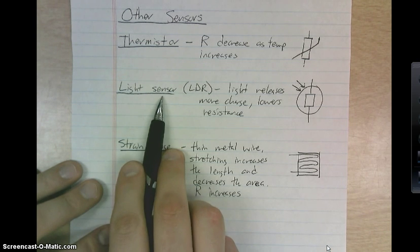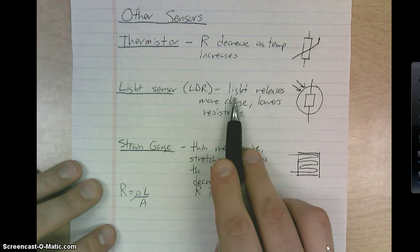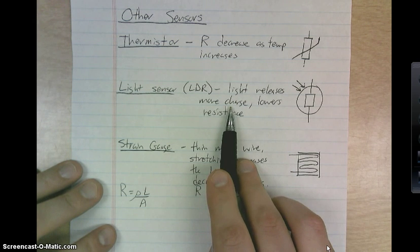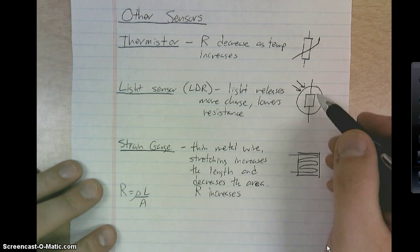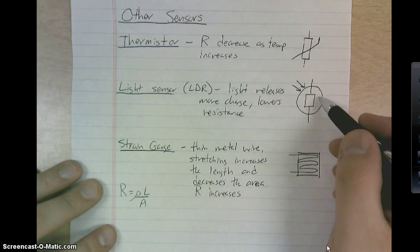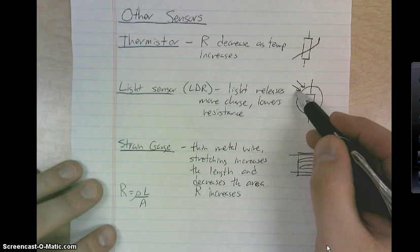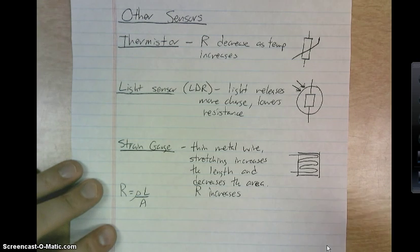You can have a light sensor, which if you shine light on it, it releases more charge, which in turn lowers the resistance. And generally the little symbol looks like this. These are supposed to be the photons striking that particular face.